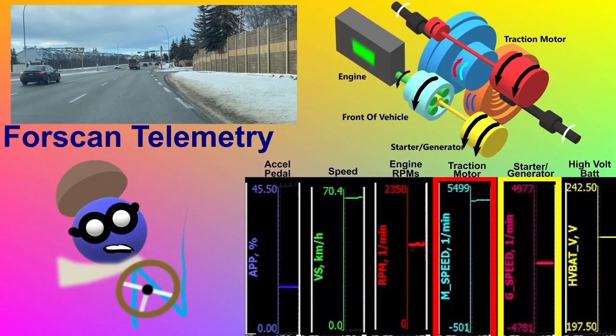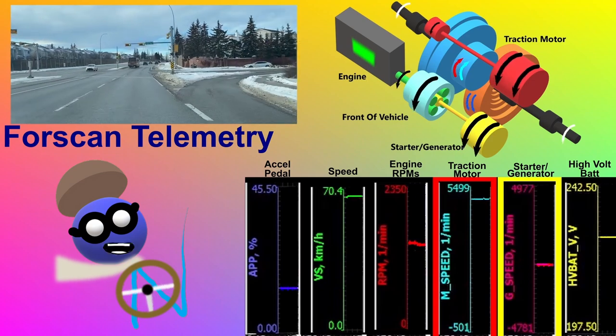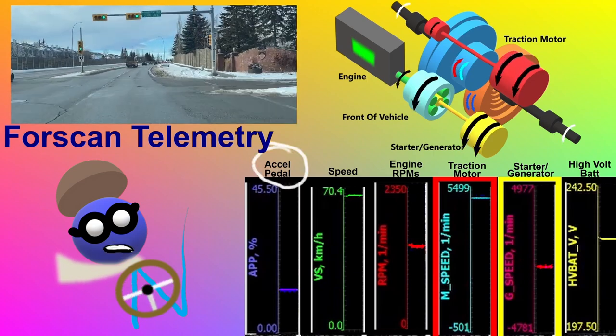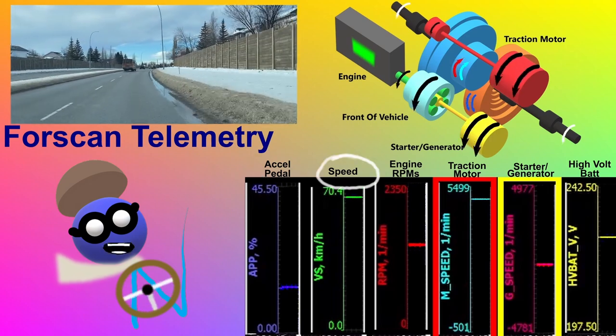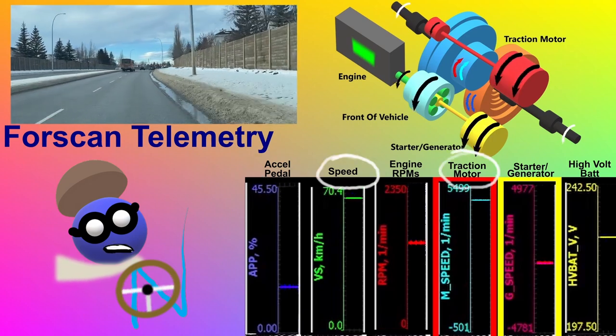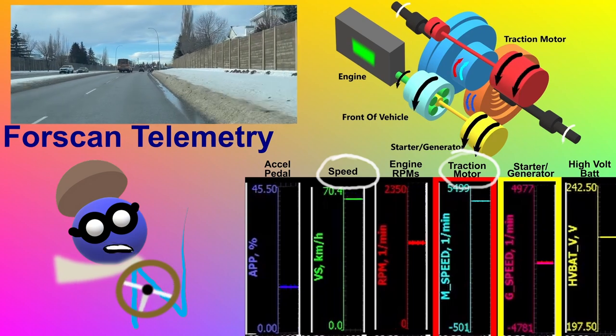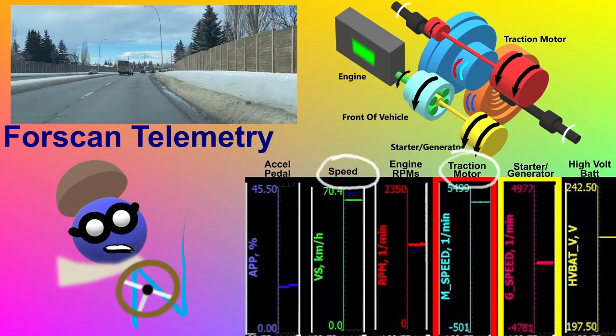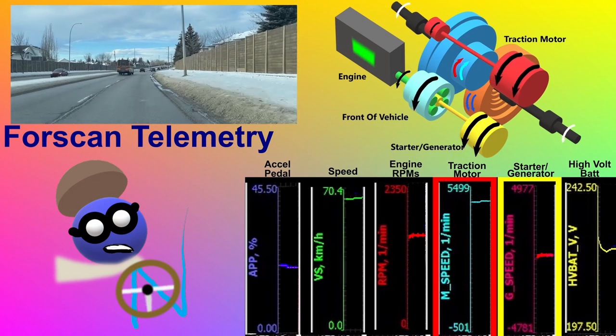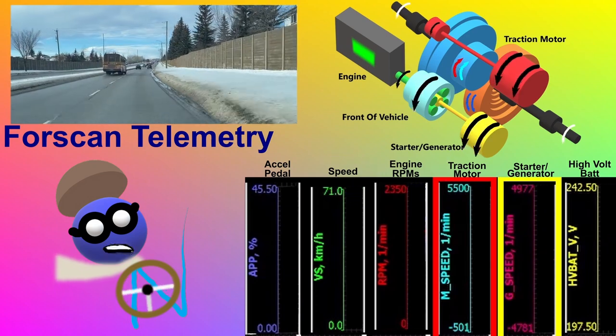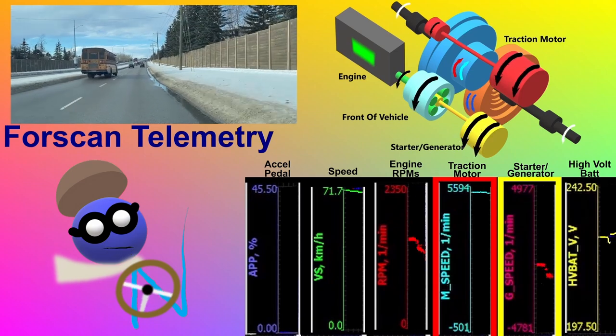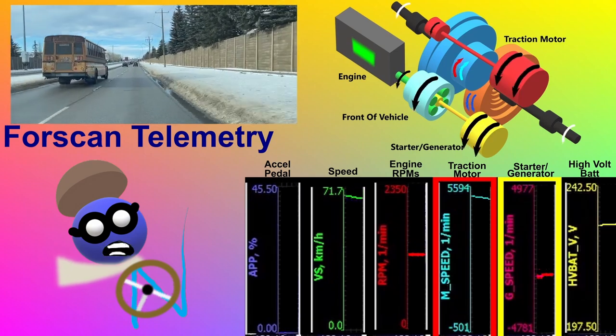The telemetry gauges from Forescan show the accelerator pedal. As I press the gas pedal, this goes up. Vehicle speed in kilometers per hour. Vehicle speed and the traction motor track together, which makes sense since the traction motor is directly connected to the wheels through the counter gear and final drive gear. That's why this is a one-speed transaxle. The engine rpms go up when the engine is on. When the engine is off, the rpms are zero.